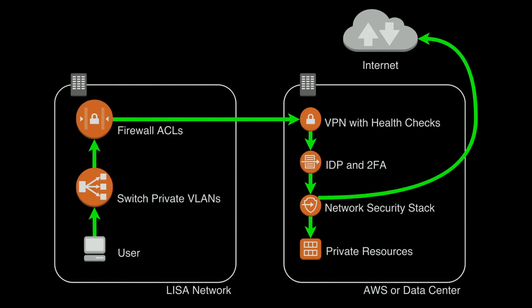You're going to funnel access to those private resources across VPN — that's the big thing. On the bottom left you'll see the user. The first thing they hit are the switches' private VLANs, and that's what prevents users from talking from one device to another on the local network. From there you go up to the firewall, which prevents your device from talking to other networks. Then you connect over to the VPN, where health checks are done — making sure your system meets corporate standards like not being full of malware, having drive encryption, screen lock, all that.